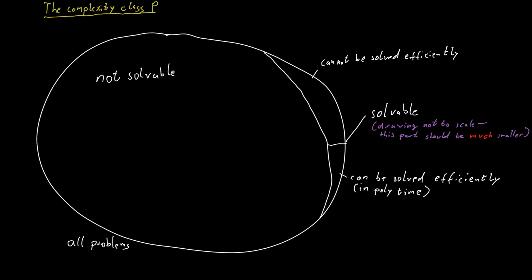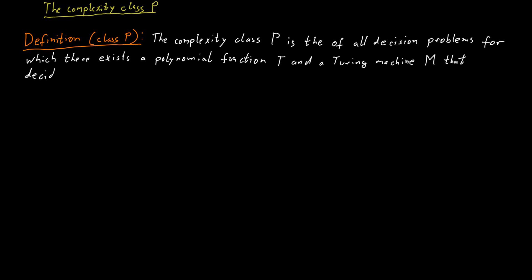And it contains all the decision problems that are decidable in polynomial time in the size of the input. That is, all the problems for which there is a polynomial function t such that there exists a Turing machine that decides that problem in time at most t of n.